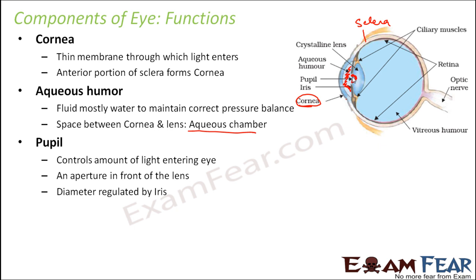The diameter of the pupil is regulated by the iris. When the iris is in one position, the pupil has a certain diameter; when the iris moves, the diameter changes. So depending upon the movement of the iris, the diameter of the pupil is decided, and that is how the amount of light can be controlled.